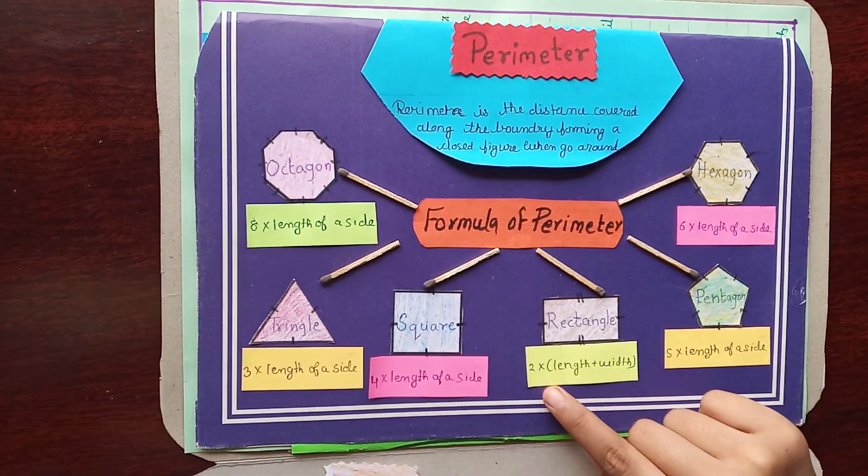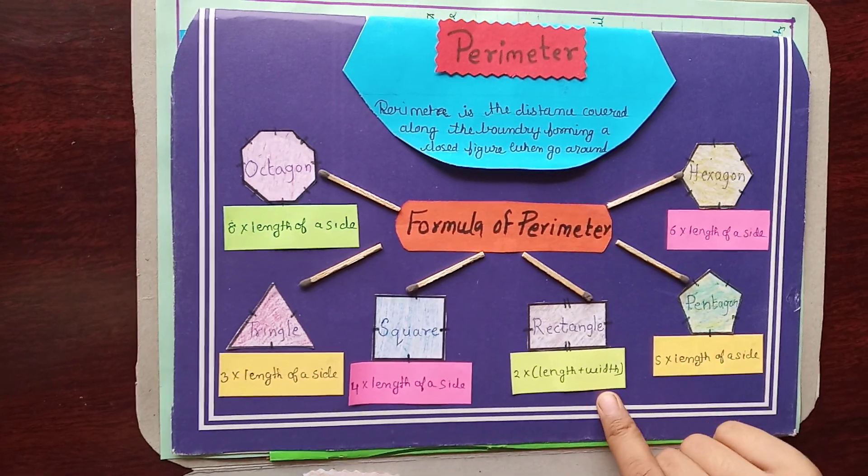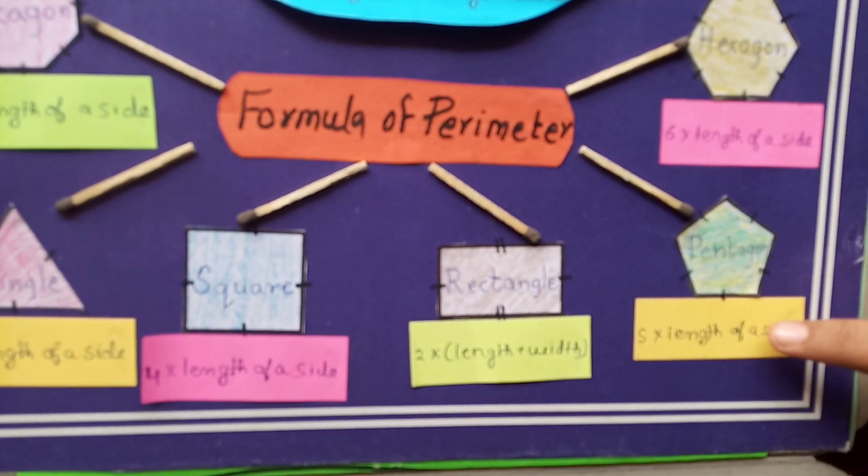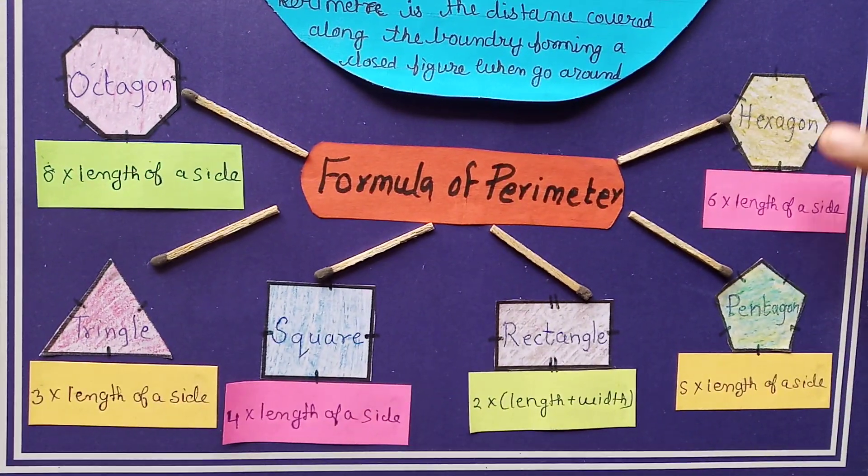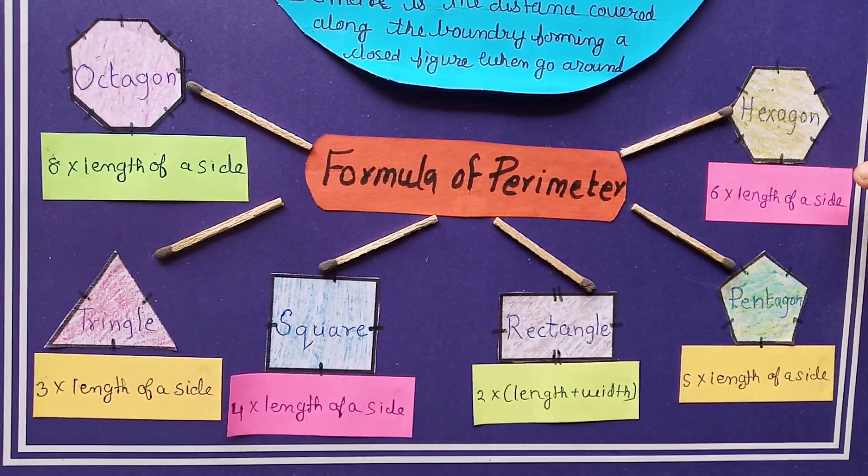Rectangle, 2 into length plus width. And pentagon, 5 into length of a side. And the last is hexagon, that's 6 into length of a side.